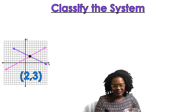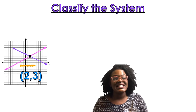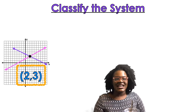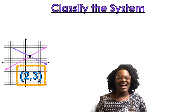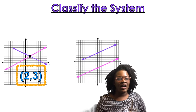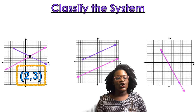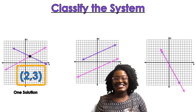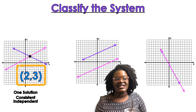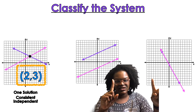Let's classify some systems from graphs. I can see two lines that cross and touch at one point. Does it have a solution? Yes. If it has one solution, I'm going to say it is consistent and, because it's only one solution, independent. So the first question is: is it consistent or inconsistent? Then, if consistent, choose between dependent and independent.